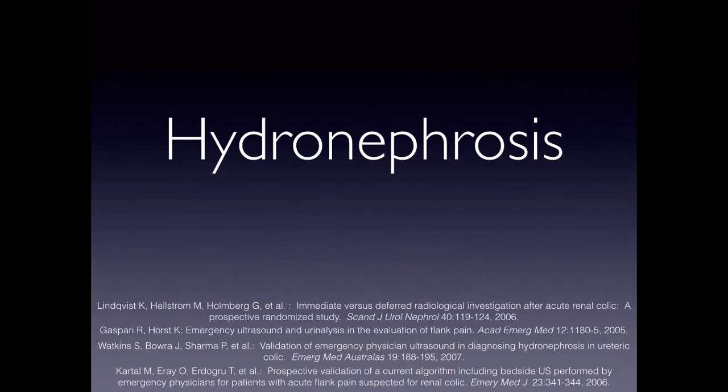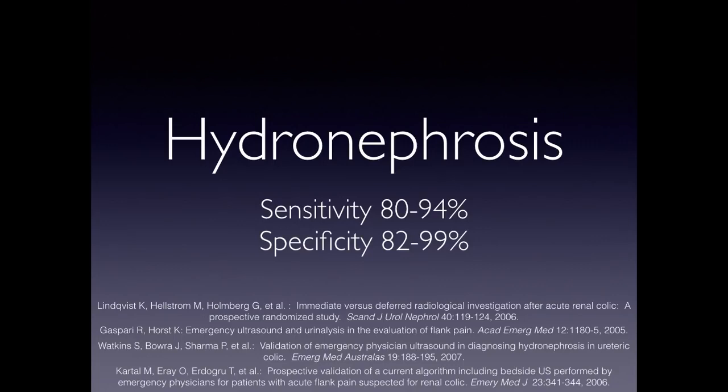The sensitivity and specificity of renal ultrasound in trained users is very good — 80 to 94 percent sensitivity and 82 to 99 percent specificity. So we're very good at picking this up.